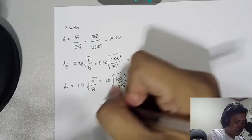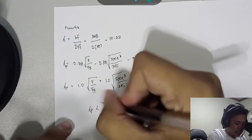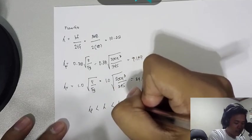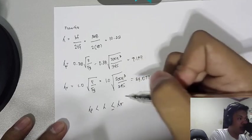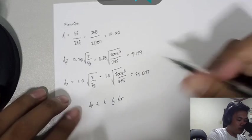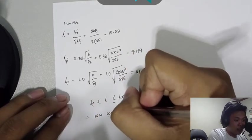We can see that Lambda P is less than Lambda and less than or equal to Lambda R. When this happens, we can consider our flange as non-compact.